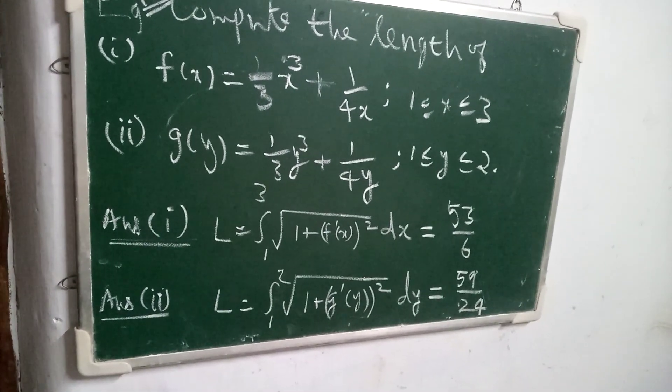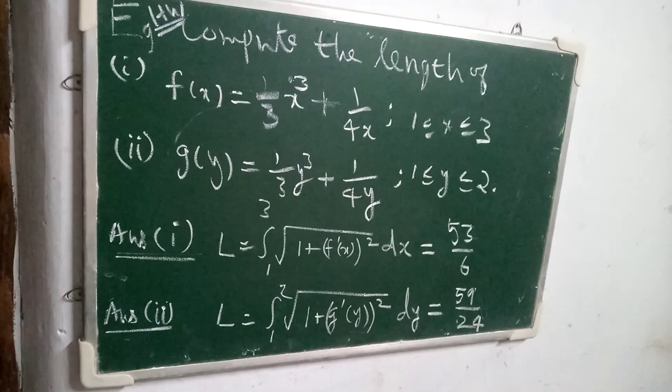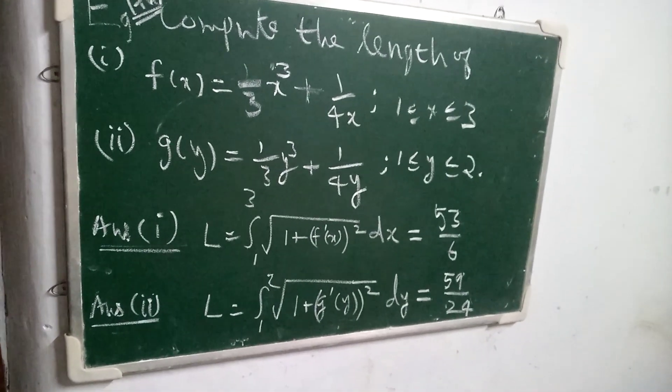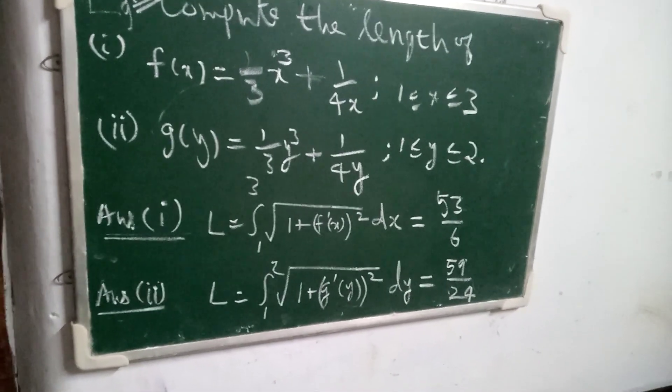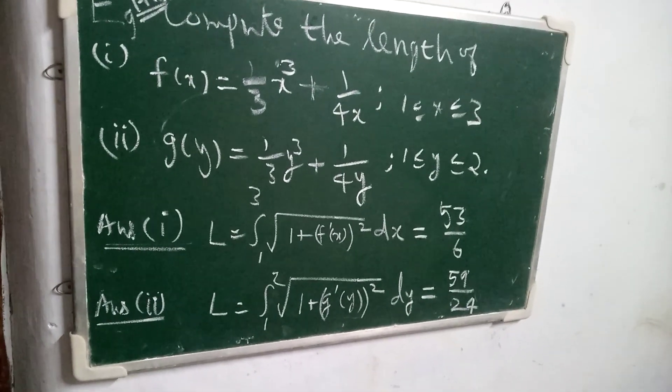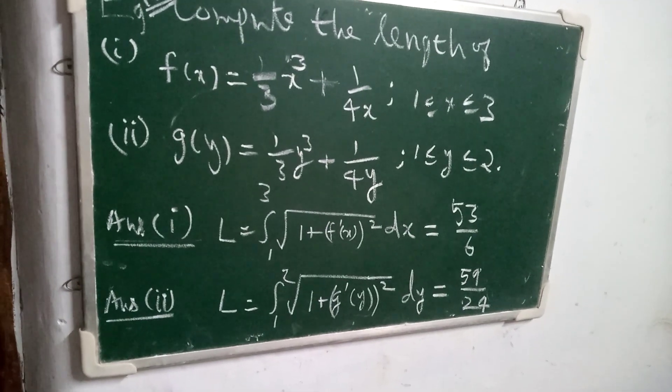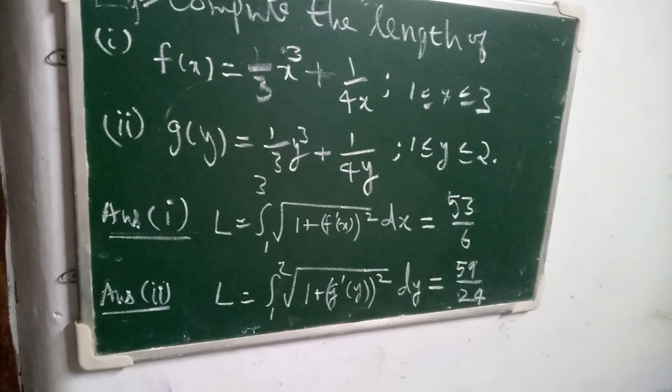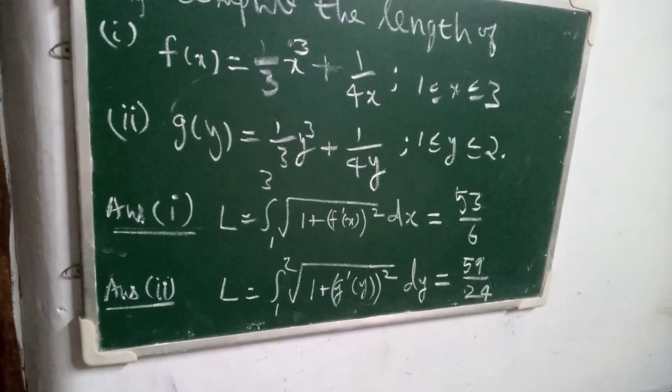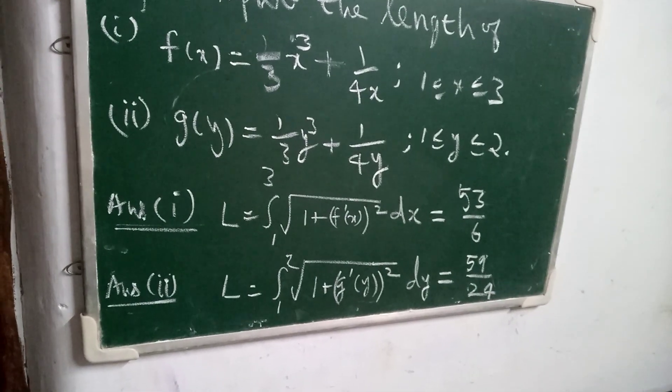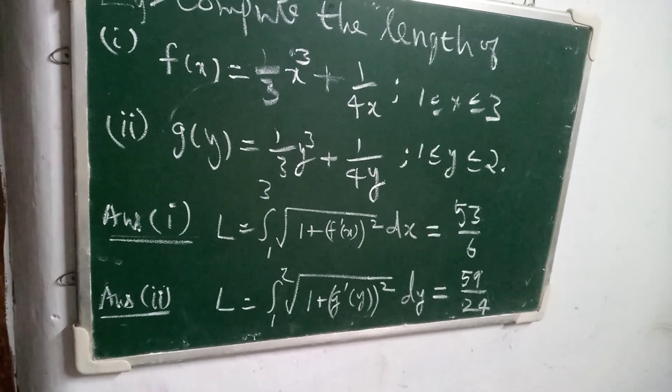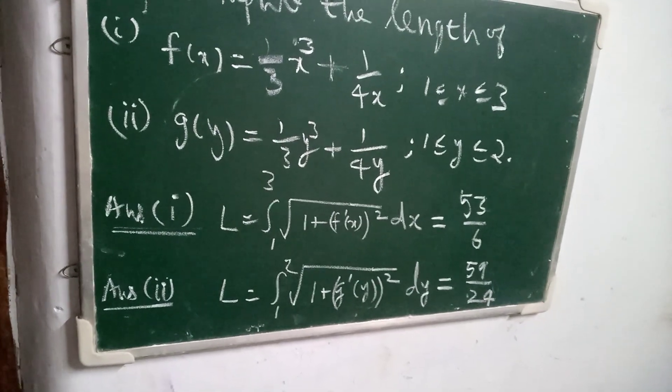Here, y is given as a function of x. In the second problem, x is given as a function of y, namely g(y) equals 1/3 y³ plus 1/(4y), where 1 ≤ y ≤ 2.